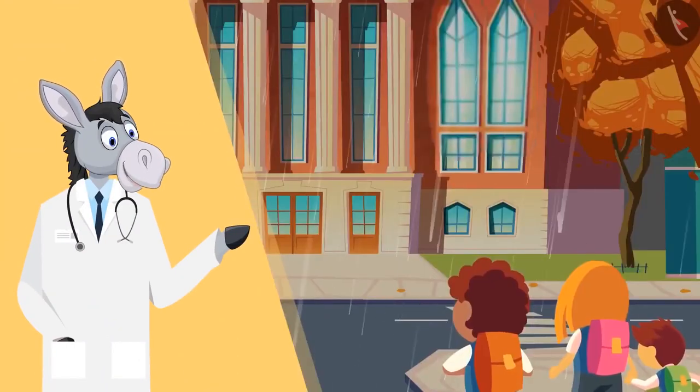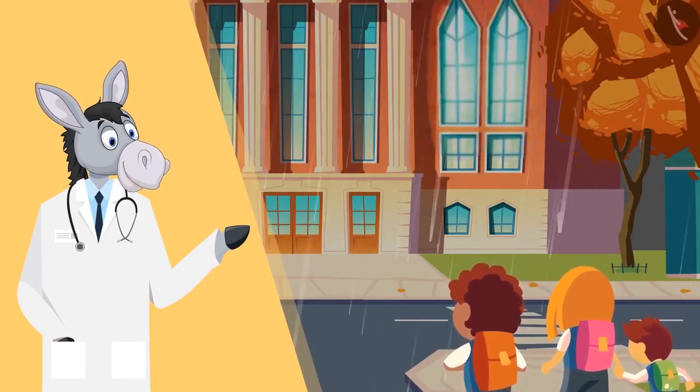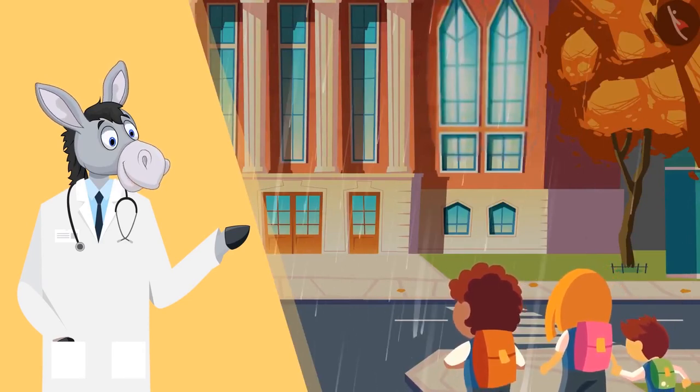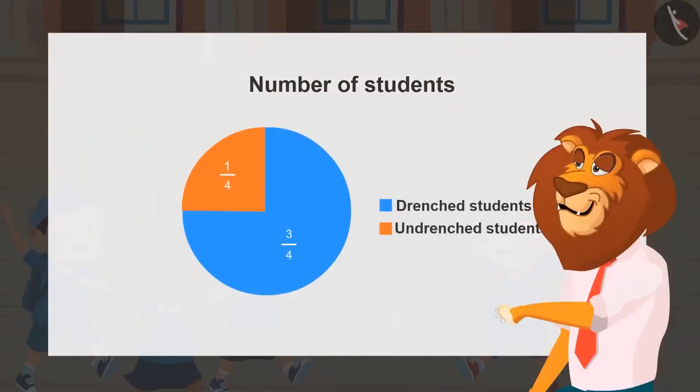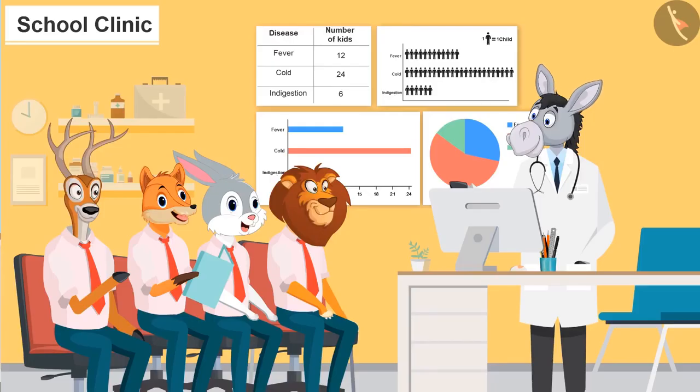Today while coming to school, students got drenched in rain. Now can you tell, has more than half of the students got drenched by the rain? Yes, more than half of the students got drenched in the rain, as three-fourths students got drenched. Very good.